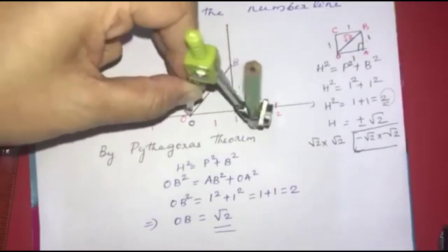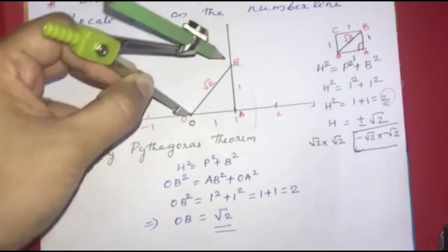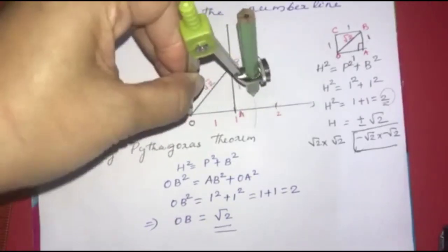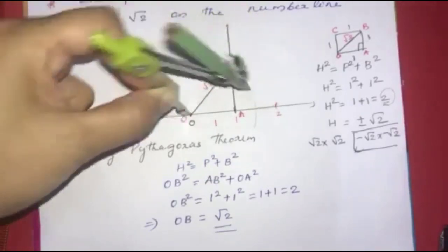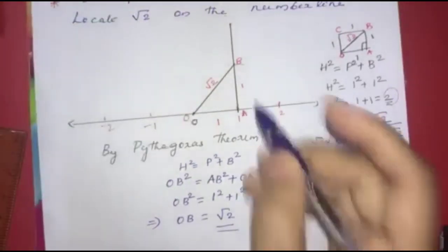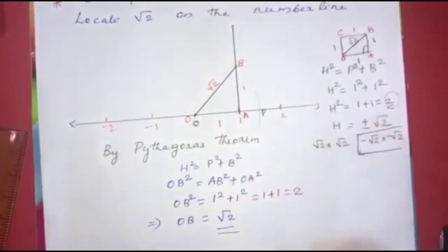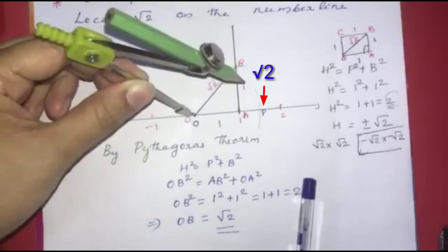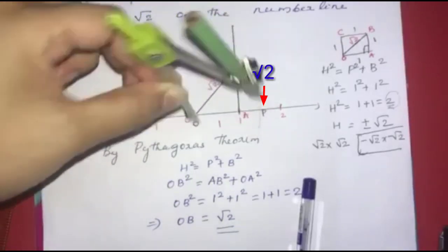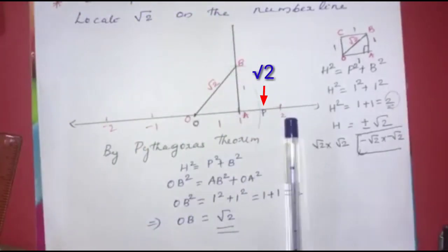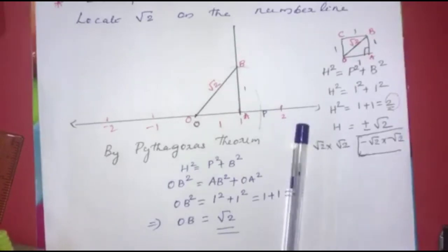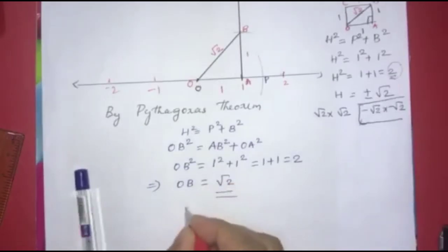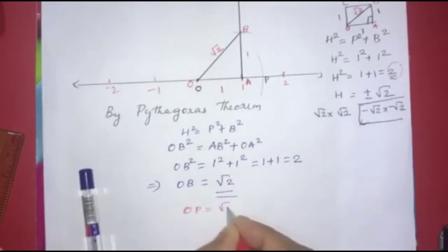The arc intersects with the circle. We have to make an arc with center O and radius root 2. We make an arc in the number line. The point is that we mark point P. We make the distance between P and O equal to root 2. We make this arc with radius root 2.